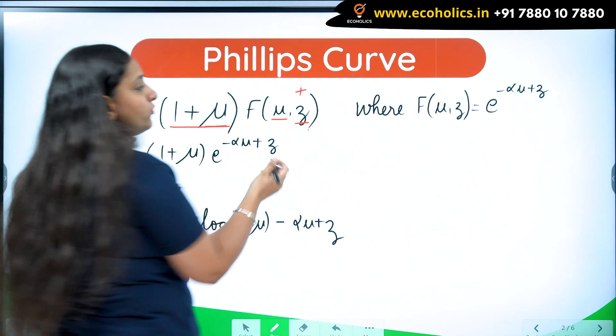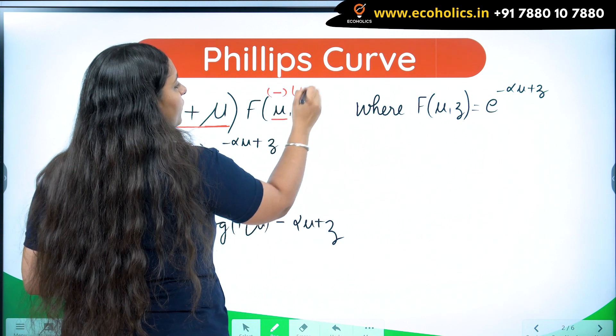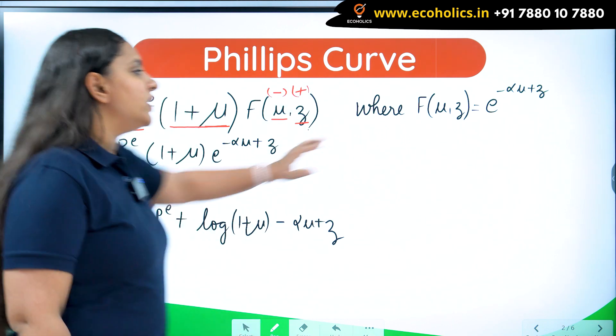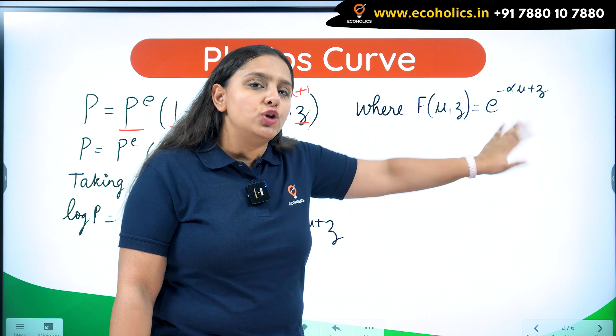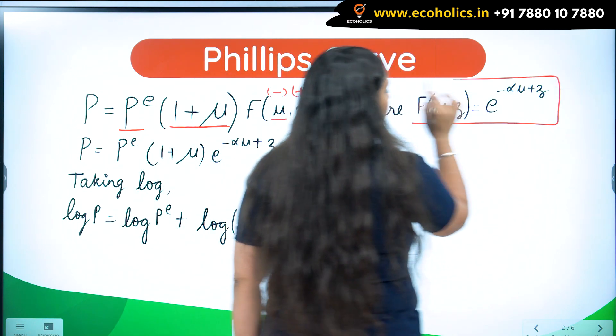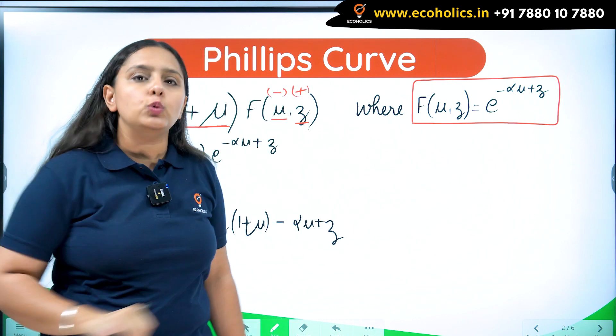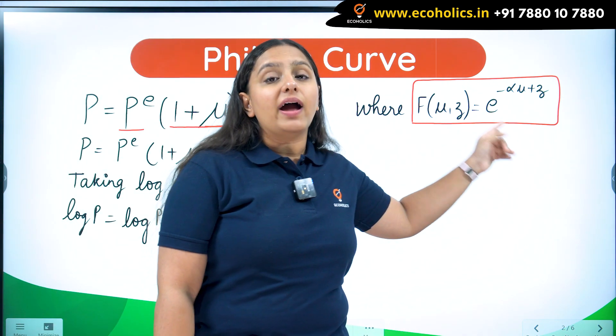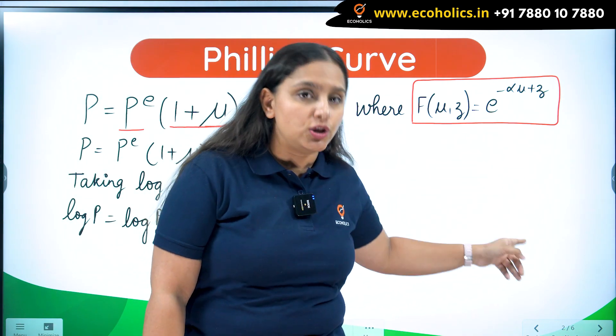Due to unemployment, it's going to affect in a negative way. We are going to take a specific functional form for the F function. I have taken this E raised to power minus alpha U plus Z.